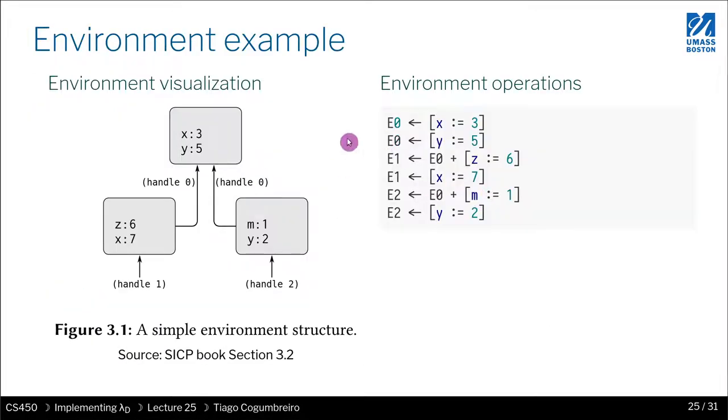We start with a root environment, an empty environment that is E0. One way of creating this image is first we do a put and assign 3 to X, and then we assign Y. These two operations could be done in reverse order and would still work.